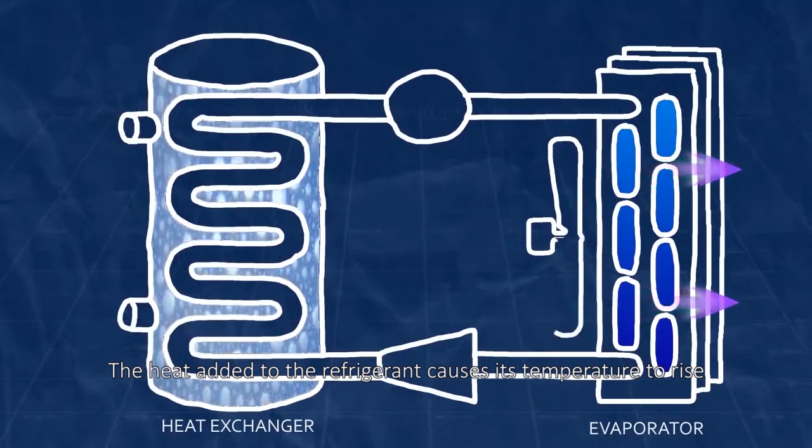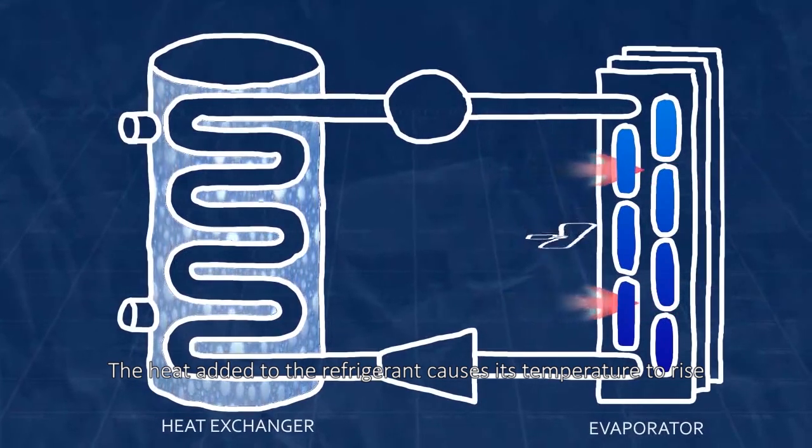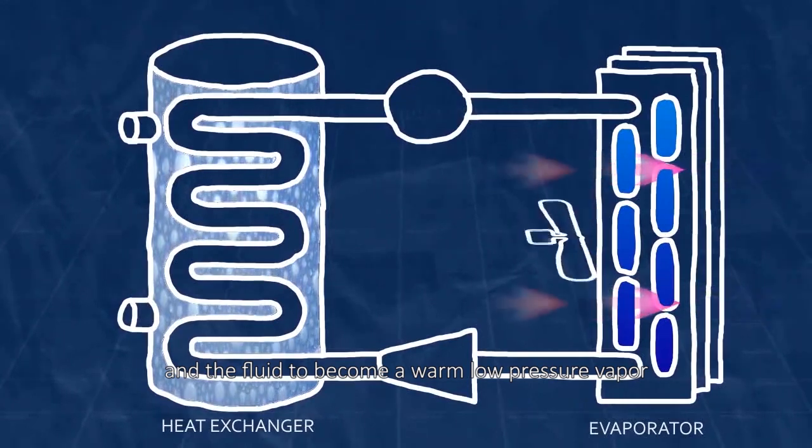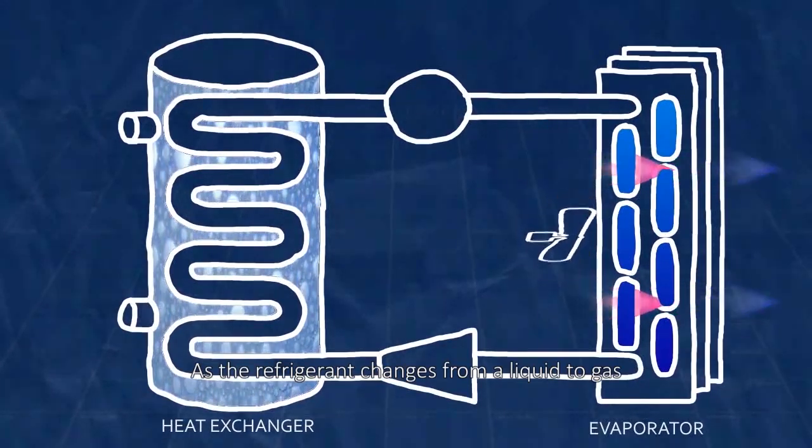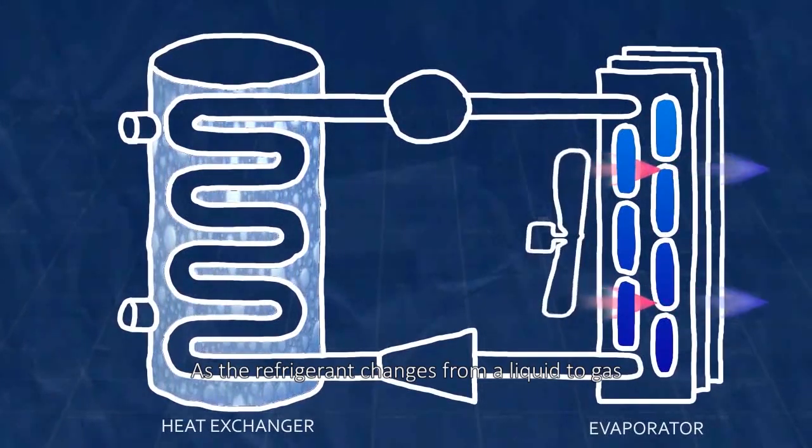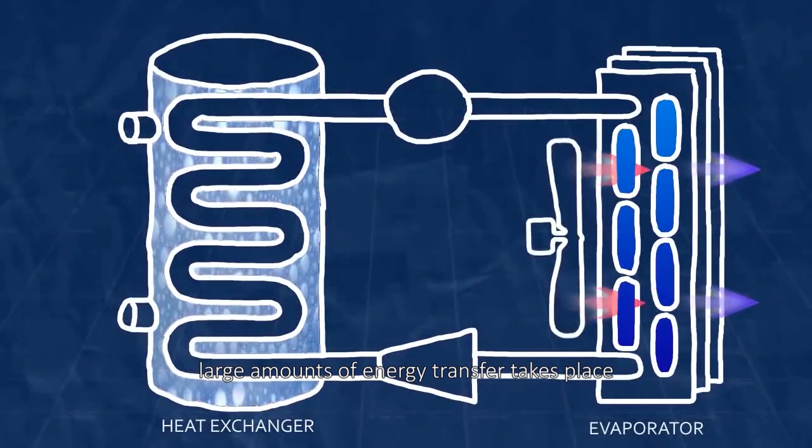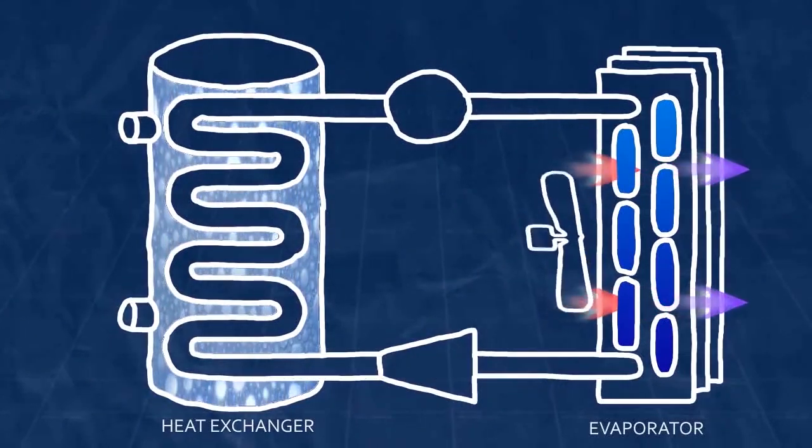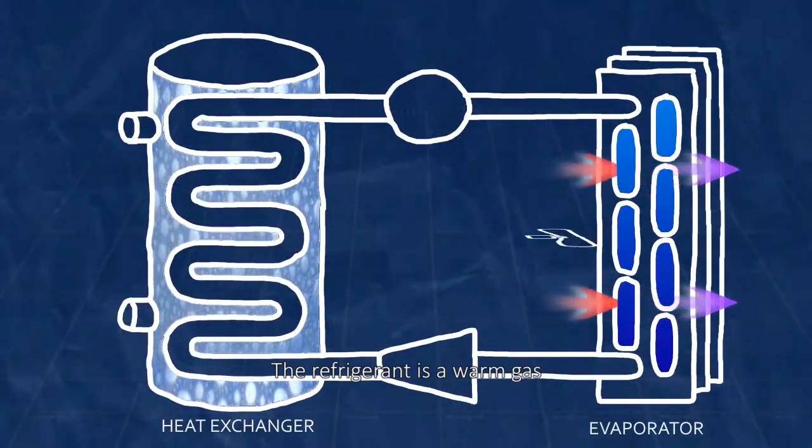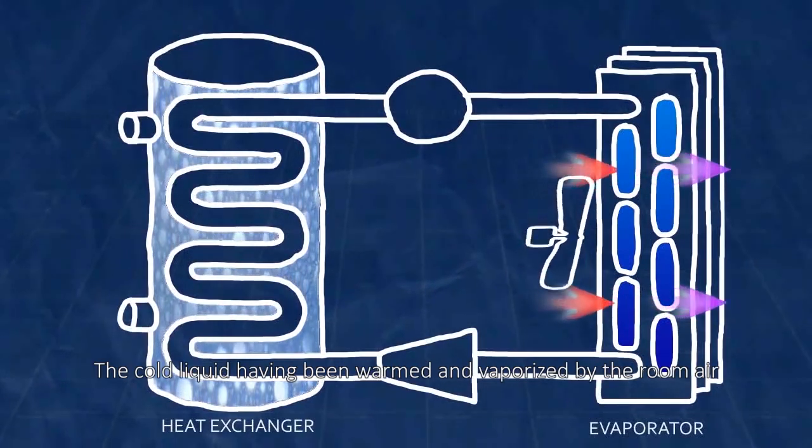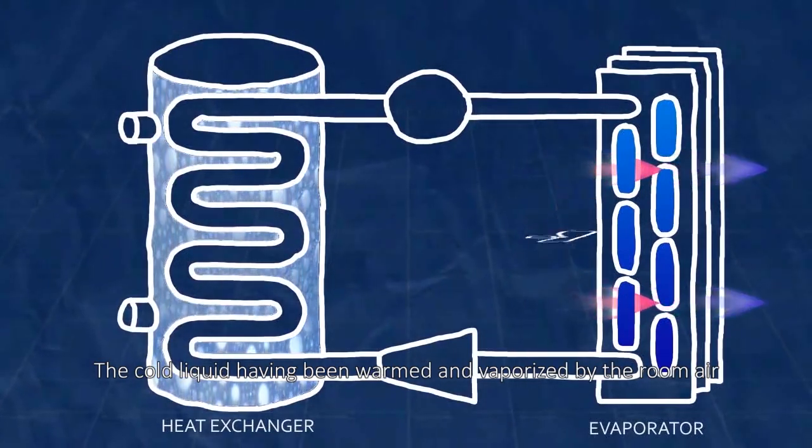The heat added to the refrigerant causes its temperature to rise and the fluid to become a warm, low pressure vapor. As the refrigerant changes from a liquid to gas, large amounts of energy transfer take place. Once it's passed through the evaporator, the refrigerant is a warm gas, the cold liquid having been warmed and vaporized by the room air.